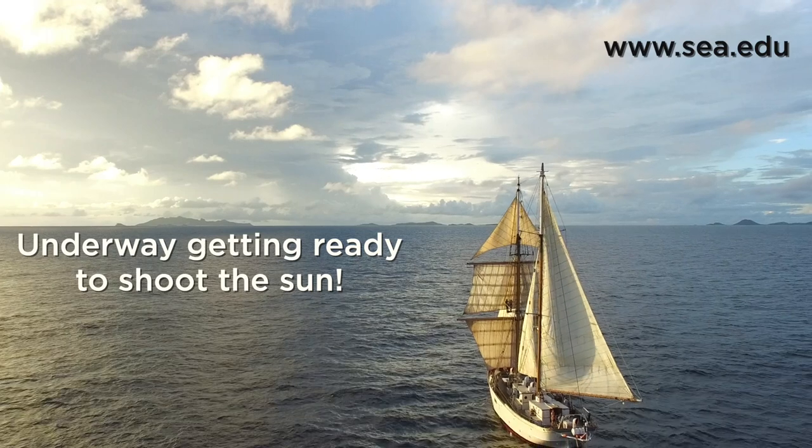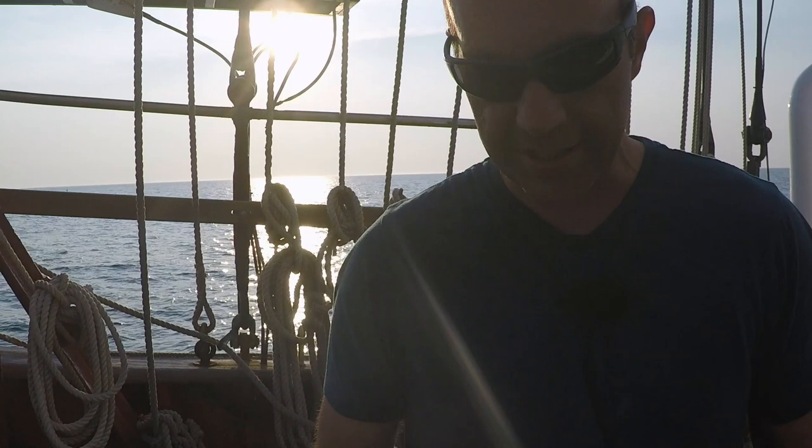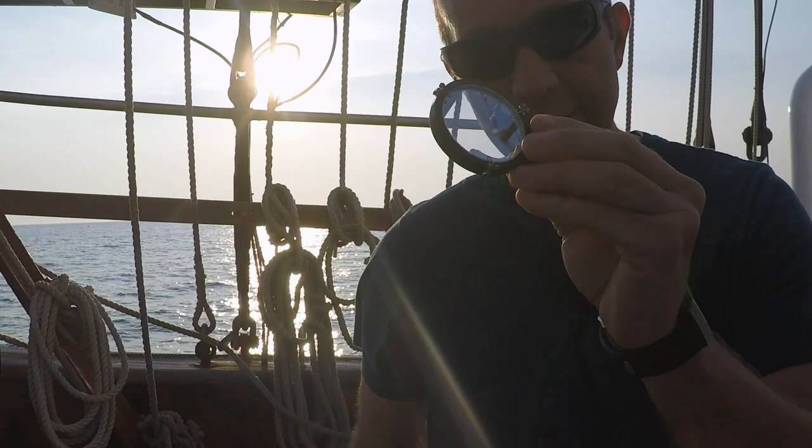There's two different types of mirrors that you can generally get for the Astra 3B and other sextants. One is a split horizon mirror and the other is a whole horizon mirror. Let's check out the differences between these two mirrors.